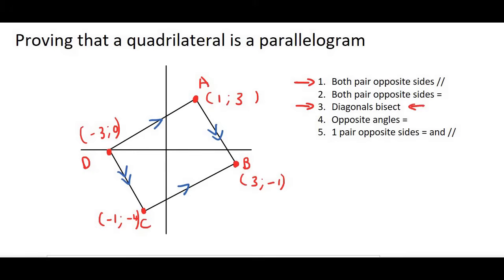The easiest method, though, is number three. The diagonals must bisect. What that means is if you have a diagonal going from A to C and a diagonal going from B to D, what you do is you work out the midpoint of A, C, and you work out the midpoint of B, D. If it's the same point, then we can say the diagonals bisect.